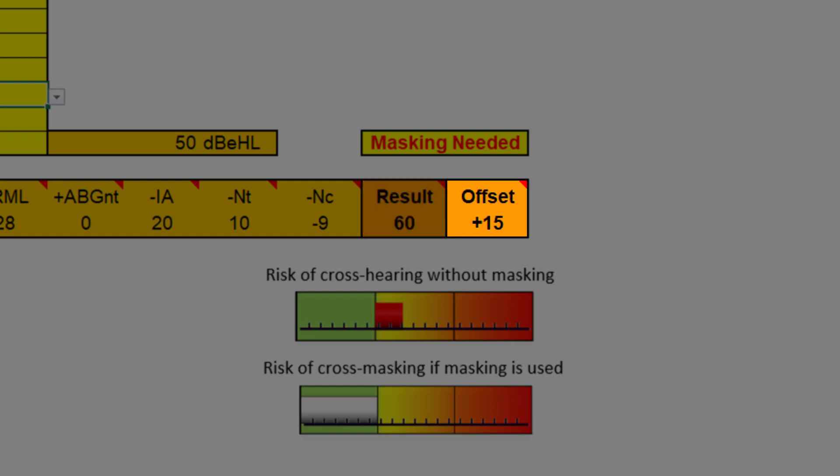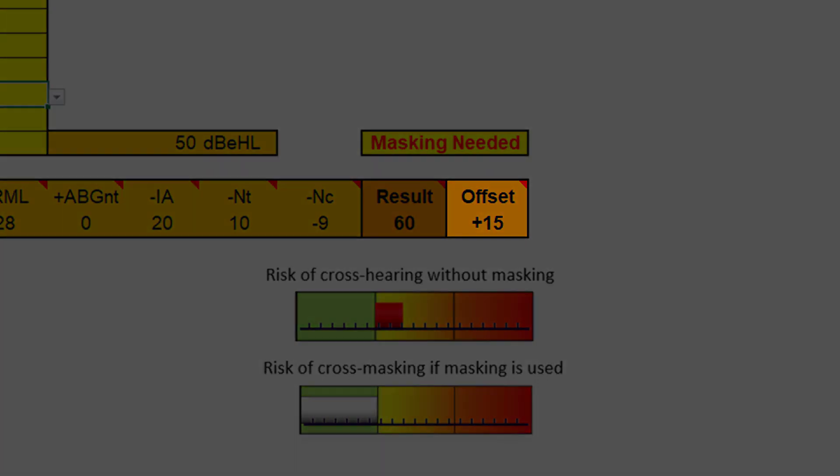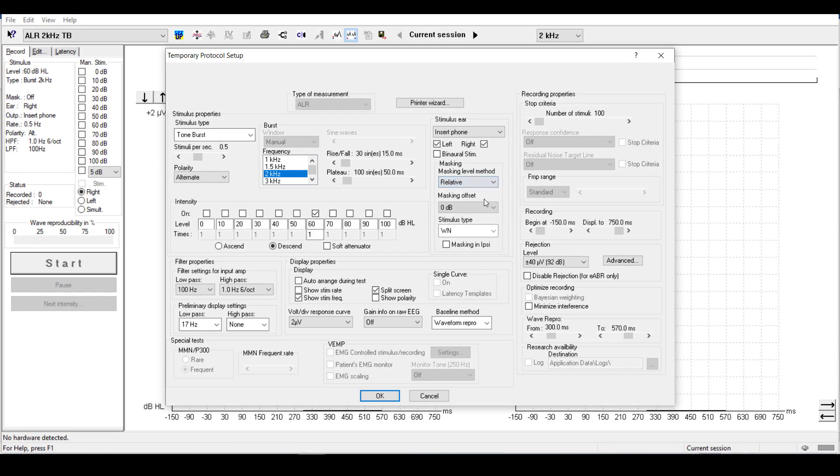The offset is the dB noise level relative to the stimulus level. If you increase your stimulus level, the offset remains the same, but the result value will vary. On the Eclipse, it is possible to use either of these values by entering them in the temporary test setup protocol.